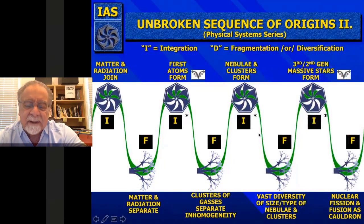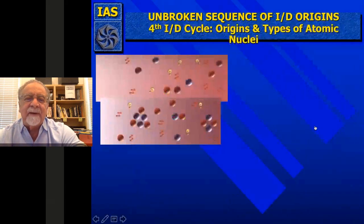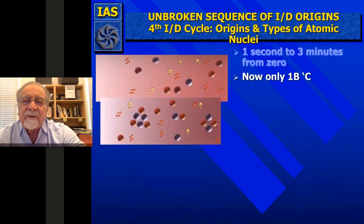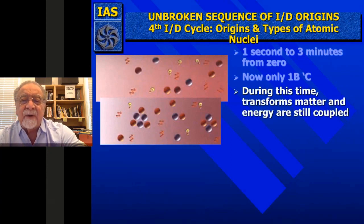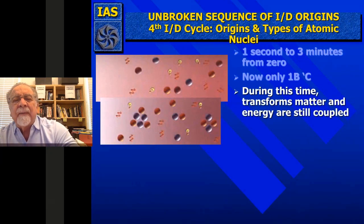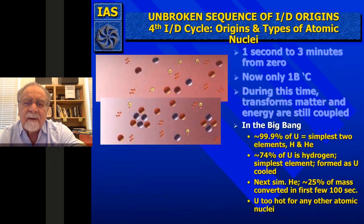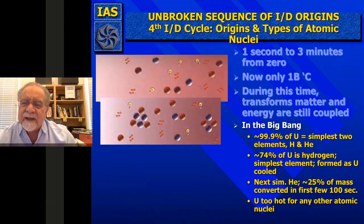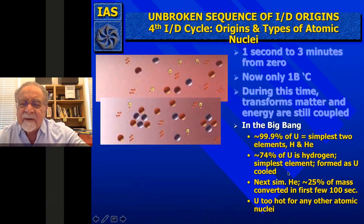Then you get the first atomic nuclei. From one second to three minutes from zero—now we're getting into times we can understand—it's only a billion degrees centigrade in the small universe. During this time, energy is still transforming more to matter. In the Big Bang, 99.9% of the universe becomes the simplest two elements, hydrogen and helium. Those are born from the cooling of the universe, whereas higher complexes into atoms take the stars to form. So 74% of the universe nowadays is still hydrogen.